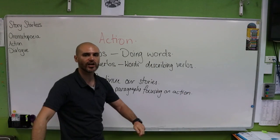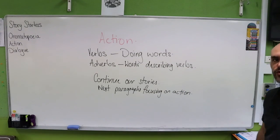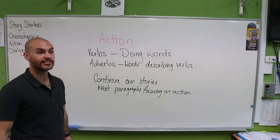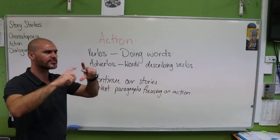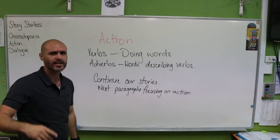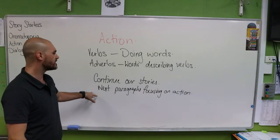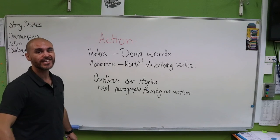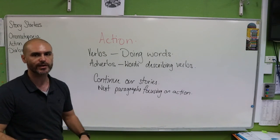To say it one last time: our next activity, we're going to be continuing our stories. Our next paragraph will be talking about the action scenes — starting with our onomatopoeia paragraphs, moving on to our action paragraphs, continuing at least two of those stories. I would love to see you continue all three, but we're seeing how we go with these first two. Action — using our verbs, our adverbs, and all of our writing skills to draw the reader into our story.